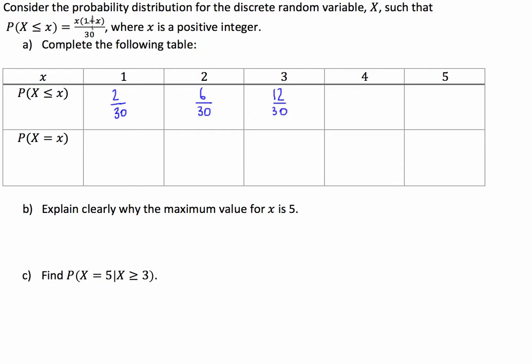We've got 4 times 5, which is 20 over 30. And we have 5 times 6, which is 30 over 30.